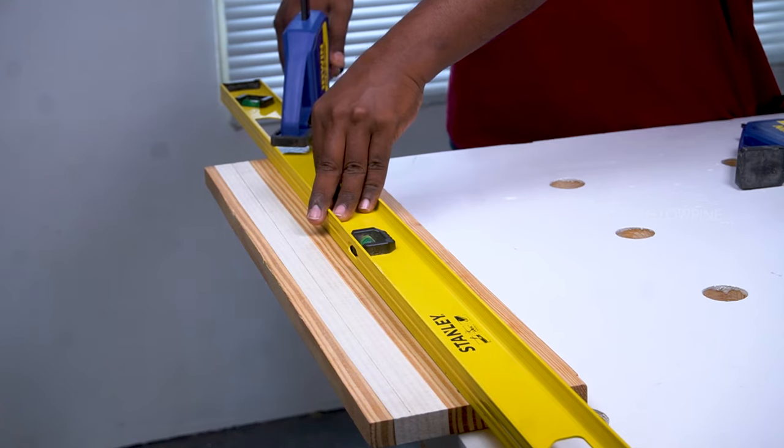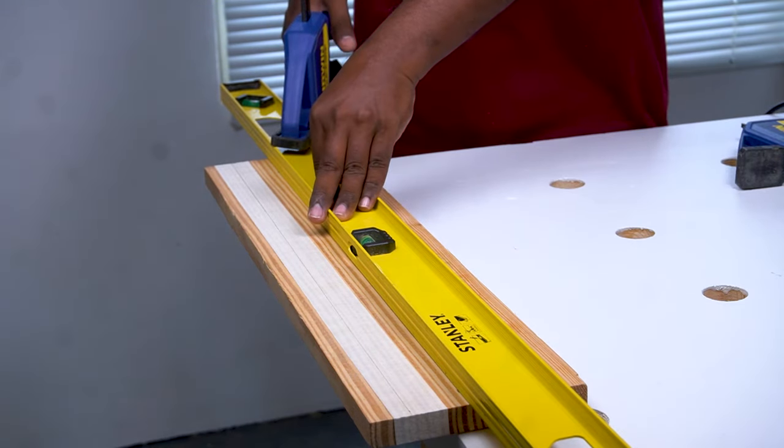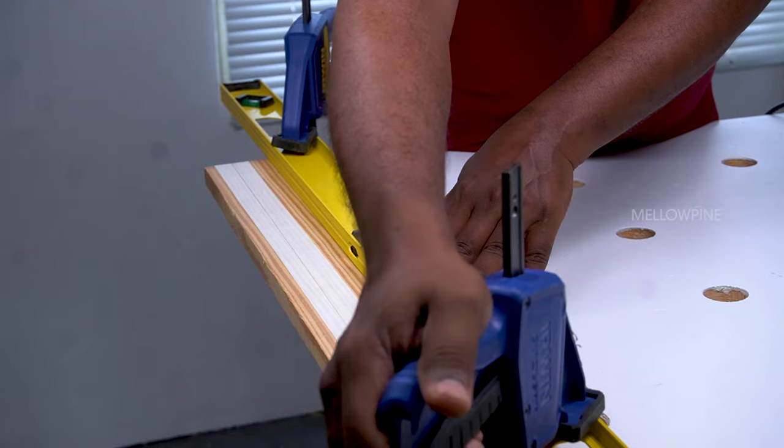Clamp down the wood along with a straight edge to guide the saw. The wood piece should overhang from the end of the work surface for the jigsaw blade to move freely.